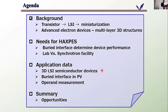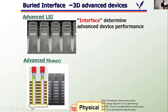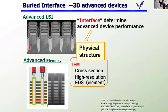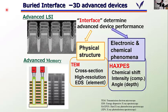Next I'd like to talk about the needs for HAXPES for these kinds of electric devices. Here you see the state-of-the-art transistors with three stacked channel layers in a gate-all-around structure. The memory structure is even more complicated — more than a hundred stacked layers — after which a very small hole is drilled and a very thin film is fabricated along the trench.